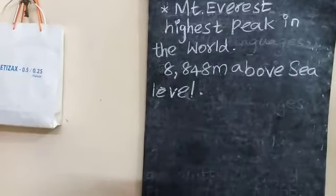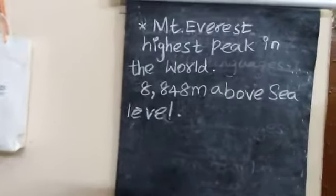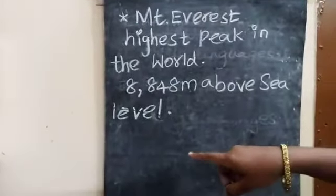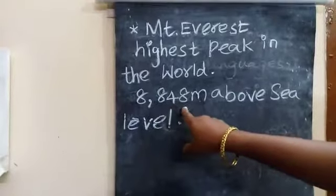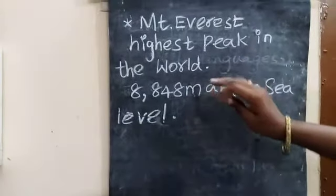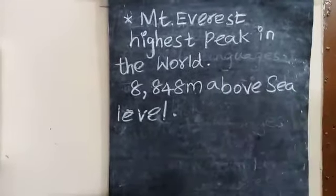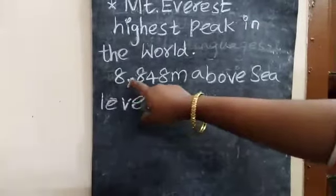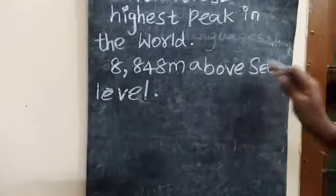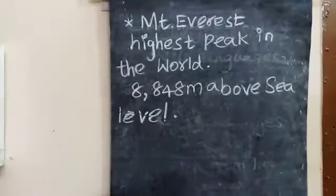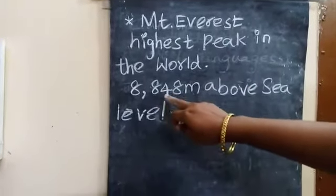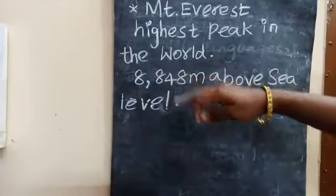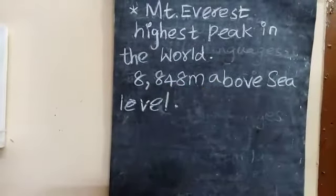Can you guess what is the height of Mount Everest? Mount Everest raises to a height of 8,848 meters above sea level. So the height of this mountain peak is 8,848 meters from sea level.